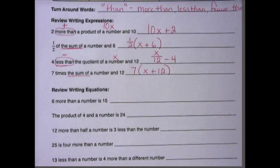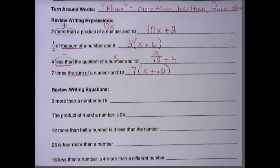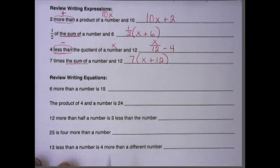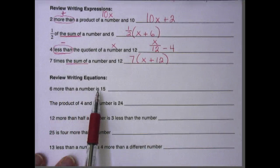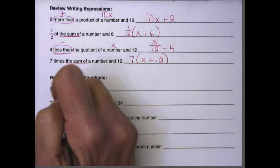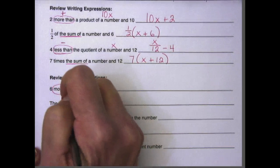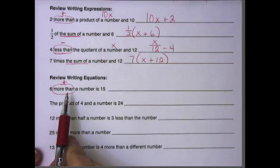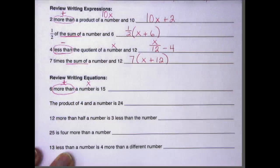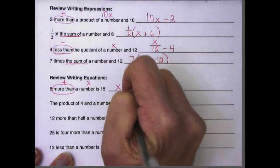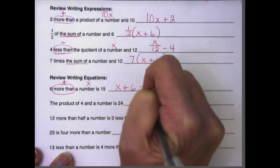So going from writing expressions to writing equations is very simple, and we did do a little bit of this at the beginning of the year. We're going to do a little bit more now. 6 more than a number is 15. So we have more than, which means we're going to add, but it's also turnaround words. A number is x, so x + 6 = 15.